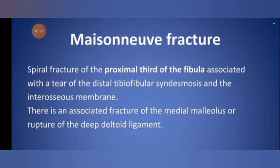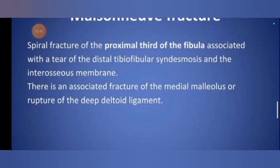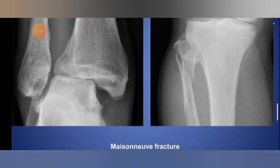Maisonneuve fractures: a spiral fracture of the proximal third of the fibula associated with a tear of the distal tibiofibular syndesmosis and the interosseous membrane. There is an associated fracture of the medial malleolus or rupture of the deep tibiofibular ligament. This diagram shows the Maisonneuve fracture pattern.